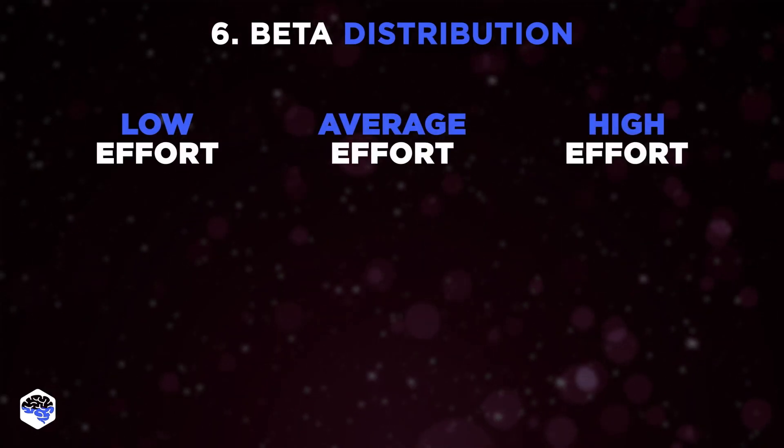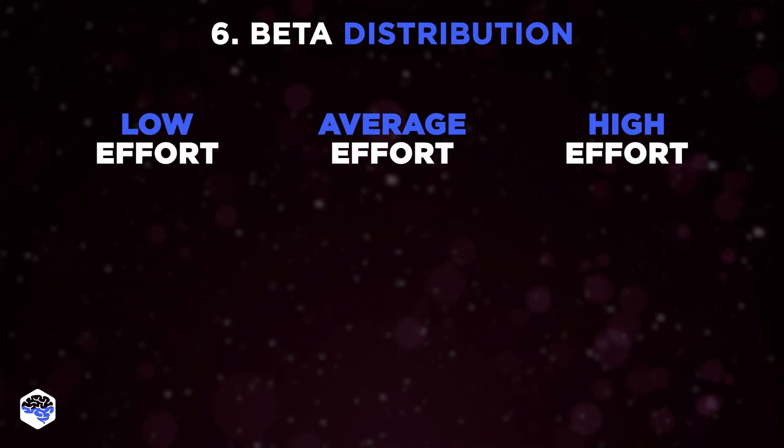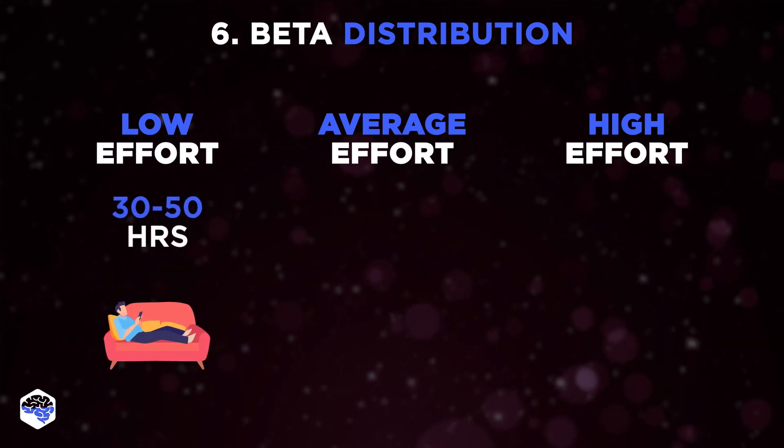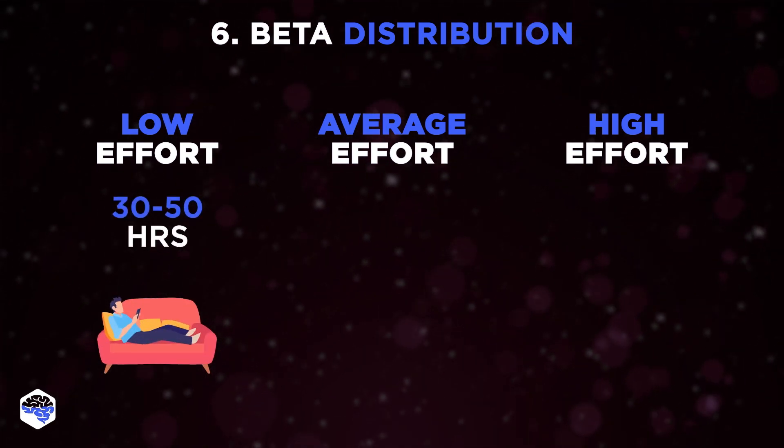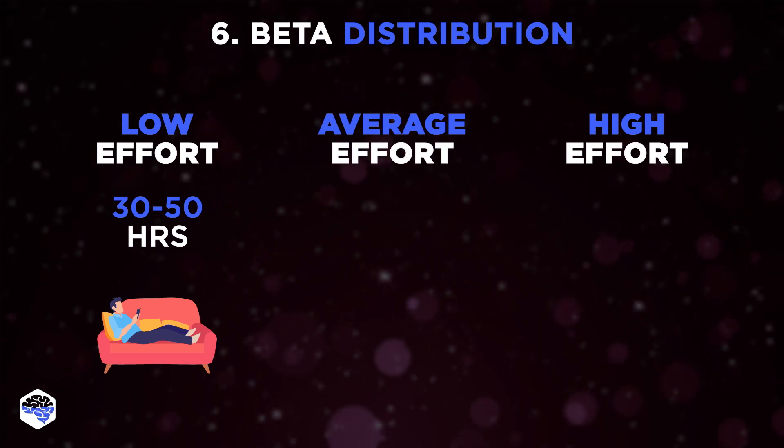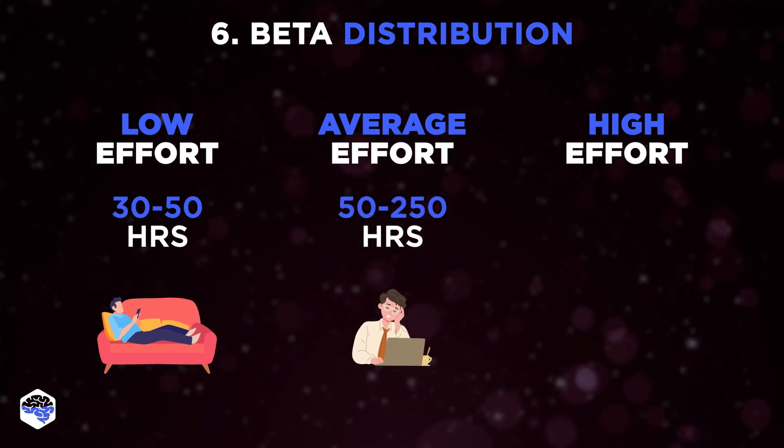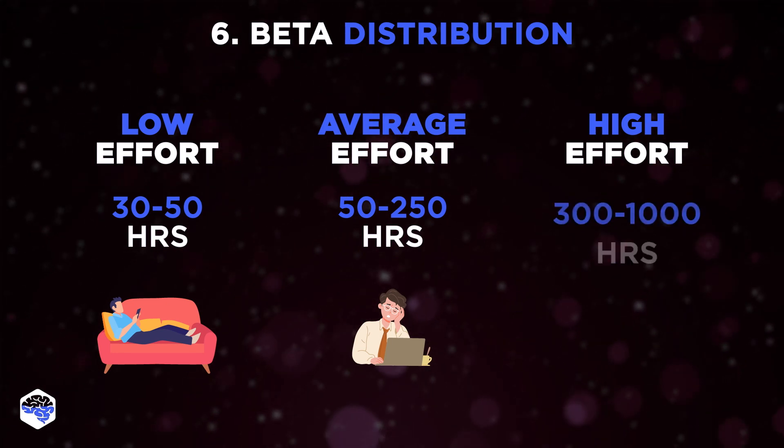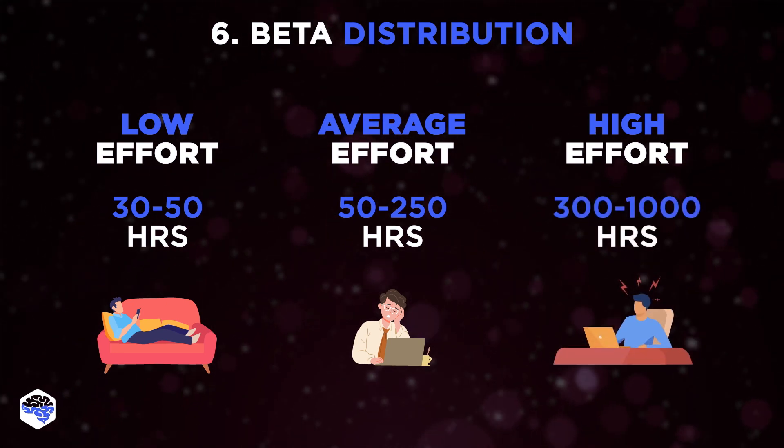ROM scores are divided according to the level of effort and include Low Effort category, which requires from 30 to 50 hours to complete. The Average Effort category requires 50 to 250 hours to complete. And High Effort category, which requires from 300 to 1,000 hours to complete.